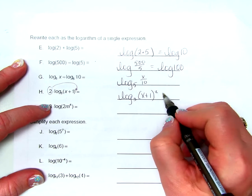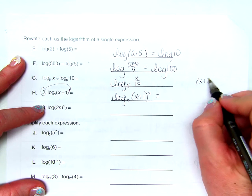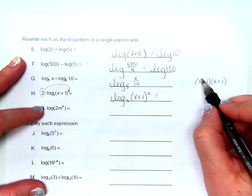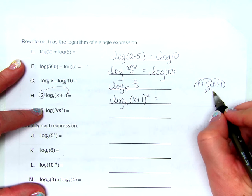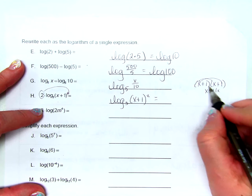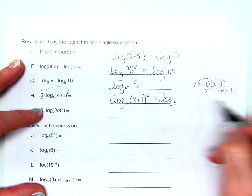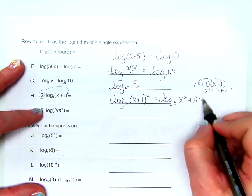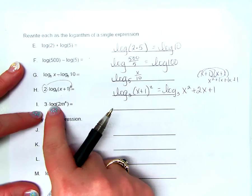We can go further with this one, because x plus 1 squared is x plus 1 times x plus 1. Distributing gives x squared plus 1x plus 1x plus 1, which simplifies to log base 3 of x squared plus 2x plus 1.